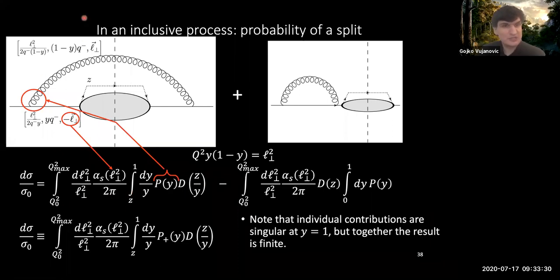And the problem with this probability is that it's not actually a well-defined quantity everywhere. And in particular, it has a singularity if you look at the splitting function at y equals 1.